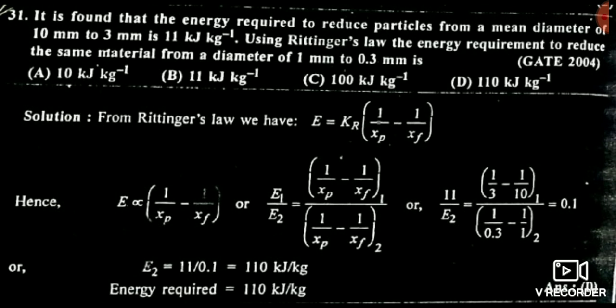Now see another question — the same approach, nothing has changed. Make two cases using Rittinger's law. Case 1: feed diameter 10 mm, product diameter 3 mm, energy used 10 kJ per kg. Case 2: feed diameter 1 mm, product diameter 0.3 mm, and E2 is asked. Take the ratio of Case 1 to Case 2 and calculate E2. The answer is 110 kJ per kg.